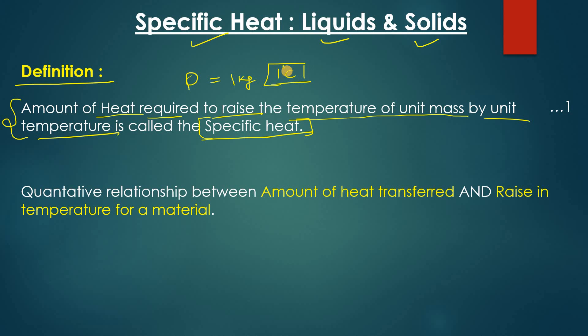We can see that specific heat is a quantitative relationship — a quantitative relationship between the amount of heat transferred or required and the rise in temperature of a material.